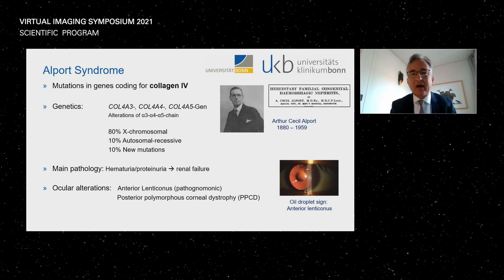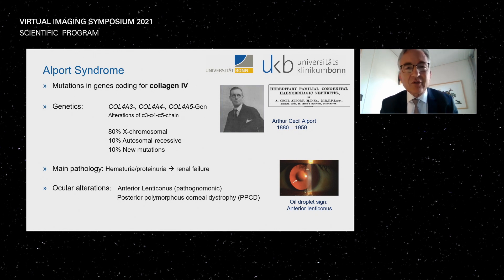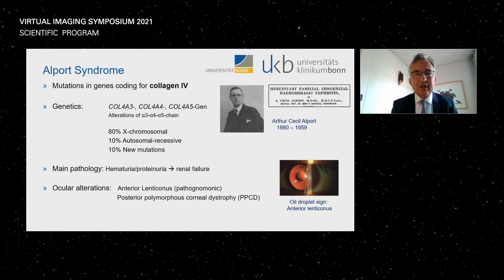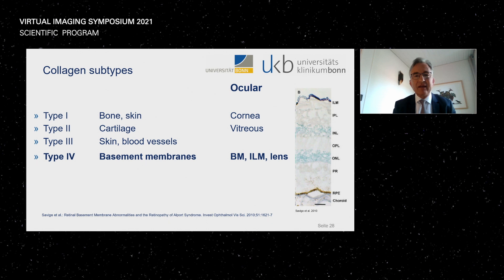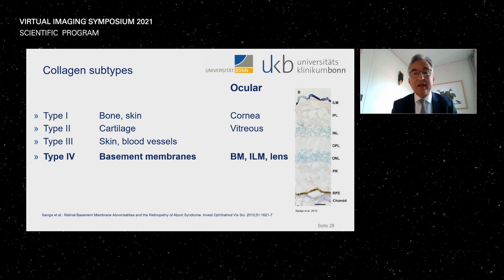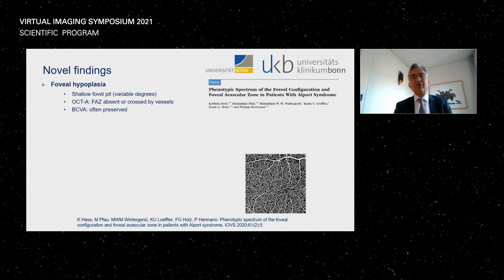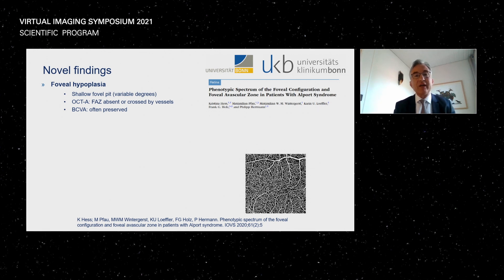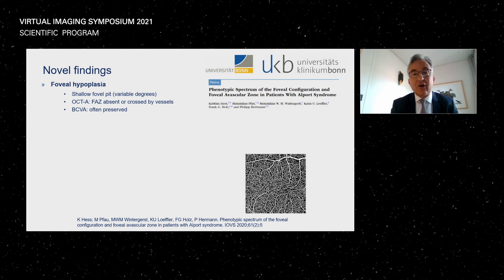To briefly recap: Alport syndrome, described by Arthur Cecil Alport, involves an aberrant collagen 4 protein. The bulk of cases follow X-chromosomal mode of inheritance, with 10% autosomal recessive. Patients usually have renal problems and, as shown with anterior segment imaging, lenticonus is a pneumonic sign along with some corneal changes. Collagen 4 is present in the internal limiting membrane, Bruch's membrane, and the lens. We find a misshaped foveal pit in Alport syndrome, and OCT angiography is the best way to assess the presence or absence of vessels in the foveola. Best corrected visual acuity is often normal.